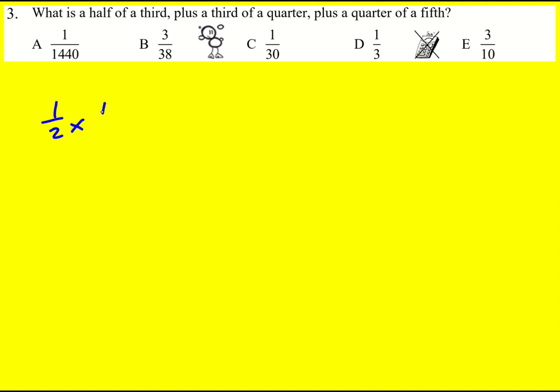A half of a third is a half times a third, and then we're adding a third times a quarter plus a quarter times a fifth. But of means times. So that's my first line.